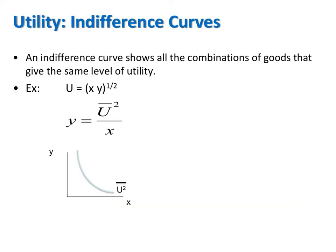I will show you how to graph an indifference curve from a utility function in two different ways. Here's the first way. Because an indifference curve shows all the combinations of goods that give the same level of utility, one approach is to take any utility function, fix u at some value — you can plug in any number, some constant k, or just leave it as u-bar — and then solve that equation for the good on the y-axis. Now we have the utility function written where y is the variable on the left and x the variable on the right.